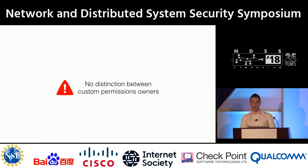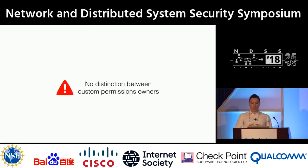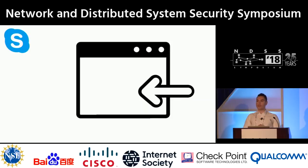The second observation we made was that not only can we not distinguish between custom and system permissions, but also we don't have the ability to know who is the owner of a custom permission — who declares a custom permission in the system. And things can get messy when you don't track the owner of a decision in a system.